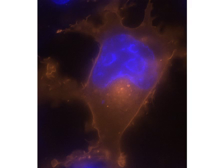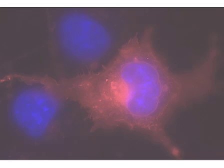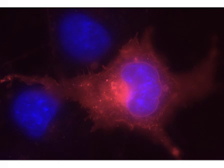The cells were labeled with SNAPCELL TMR-star for 30 minutes and counterstained with Hoechst 33342 for nuclei. The red fluorescence indicates the presence of cell surface receptor protein ADR beta 2, while blue fluorescence identifies the nucleus.